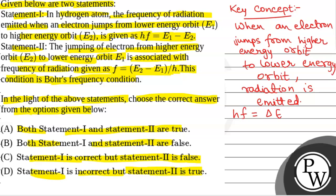Now, in the first statement, we have been given: when an electron jumps from lower energy orbit to higher energy orbit, the frequency of radiation emitted. So this statement is incorrect, as when an electron jumps from lower energy orbit to higher energy orbit, energy is absorbed, not radiated. Statement 1 is incorrect because the energy should be absorbed.